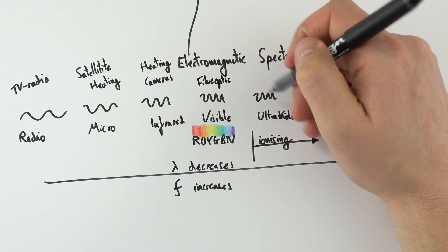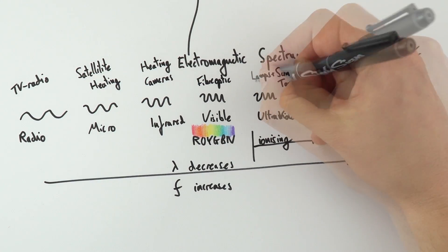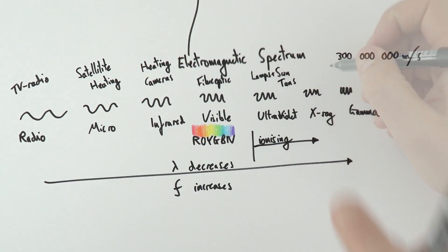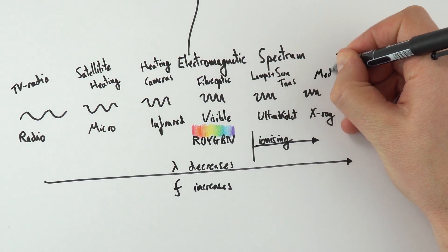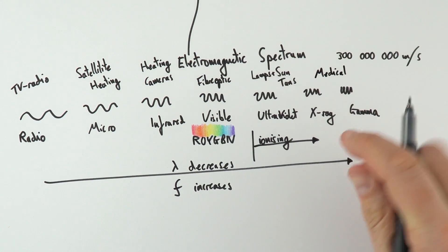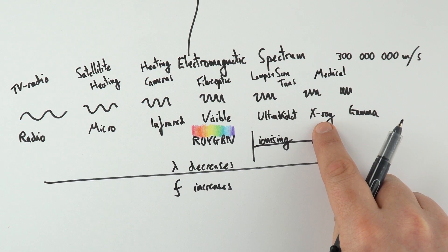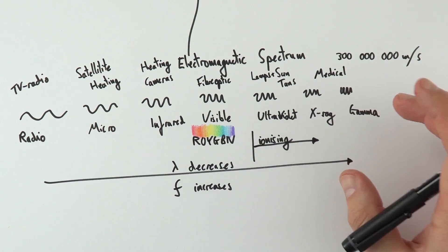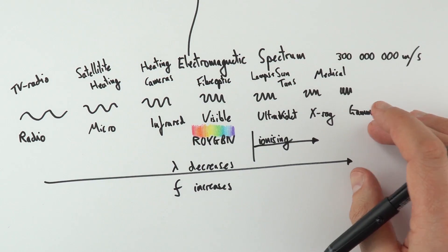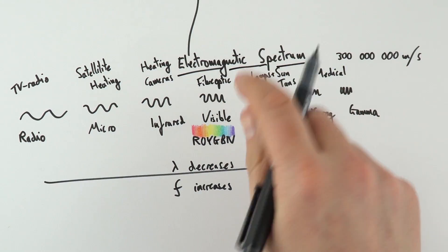We then have ultraviolet, which is used for energy-efficient lamps and also for sun tanning. X-ray and gamma, both really high frequency, can be used for medical uses. They can be used to scan the body to find out where something's gone wrong, maybe using a conventional x-ray, maybe a CT scan, or maybe some radioactive tracer. But they can also be used to blast away at damaged parts of the body to reduce cancer, for example.